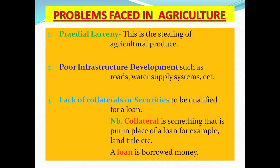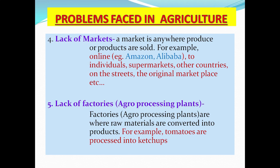Number four: lack of markets. A market is anywhere produce or products are sold — for example, online platforms like Amazon or Alibaba, supermarkets, other countries, or street marketplaces. A major problem for farmers is not having enough markets. It is best to seek your markets before even starting your farm.